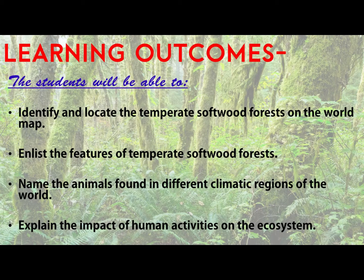Students, you will be knowing the types of trees found here, the shapes of the trees, the leaves, and what qualities they have. Next is to name the animals found in different climatic regions of the world. You will be able to identify the types of animals living in different climatic conditions. And the last learning outcome is to explain the impact of human activities on the ecosystem.